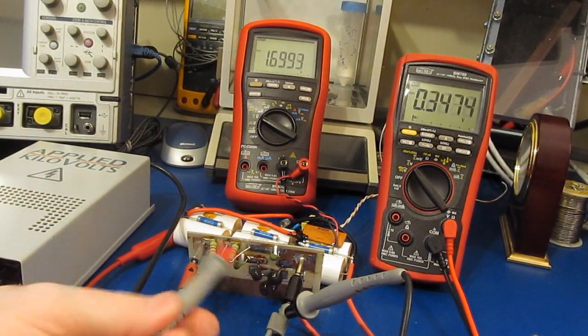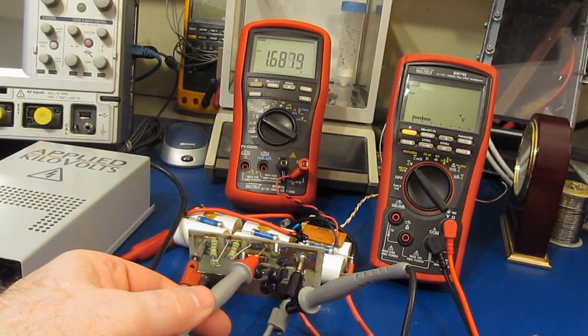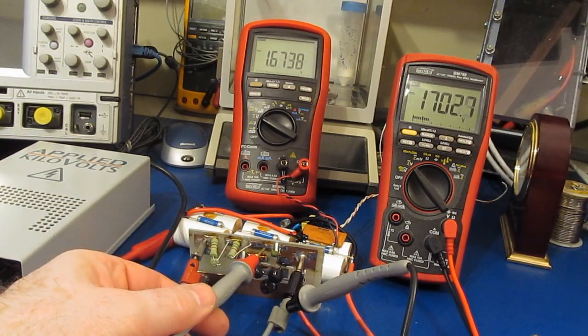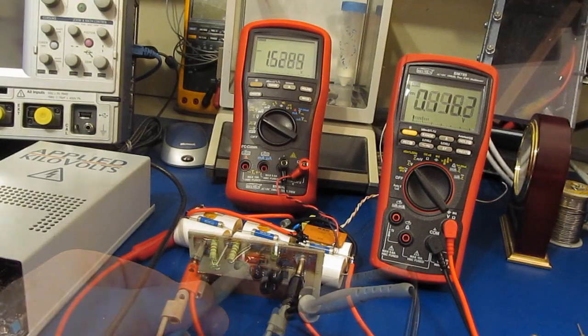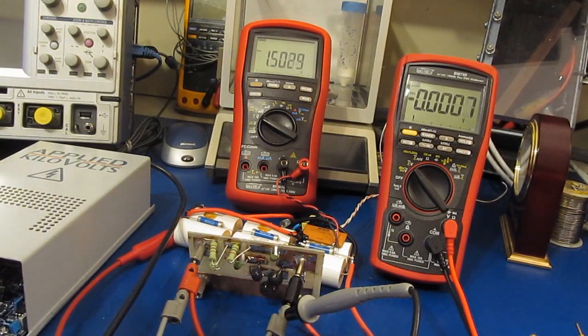How much is dropped across our MOV, or how much is dropped across the PTC. Looks like all of it. 1.7K. You can see something is starting to burn.